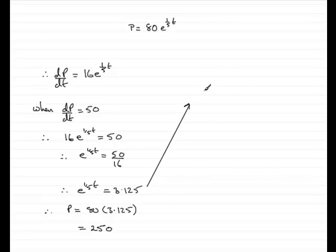If you've got e to the one-fifth t equals 3.125, if you're solving this for t, what I'd want to do is take natural logs to both sides. The natural log of e to the one-fifth t would equal the natural log of 3.125. And then by the power rule for logs, I would bring out the one-fifth t and have the natural log of e. And that's going to be the natural log of 3.125.